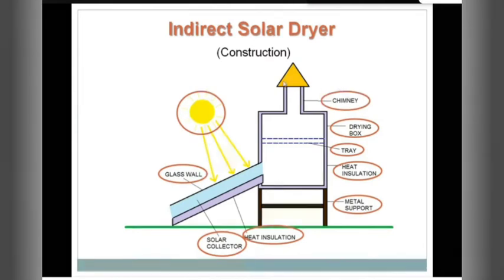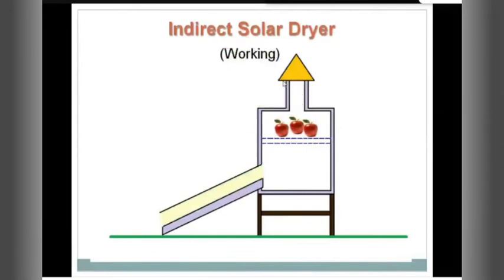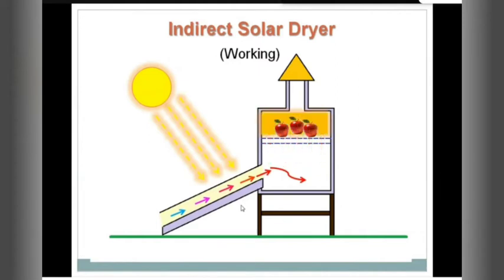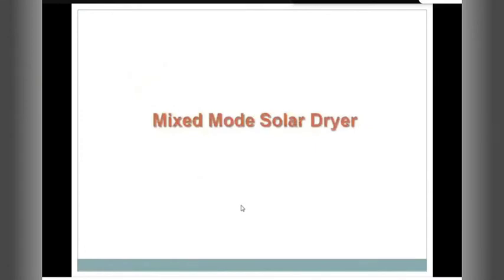Inside the drying box, you put your fruits on the tray. Sun rays fall on the solar collector and heat up the air inside it — blue arrows symbolize cold air, red symbolizes hot air. The hot air enters the drying chamber, moves up to the produce section, and heats up the area. The hot air vaporizes the moisture from the apples, and the hot air and vapors are expelled through the chimney. Some people then took one element from the indirect and one from the direct solar dryer and fused them — creating the mixed mode solar dryer.